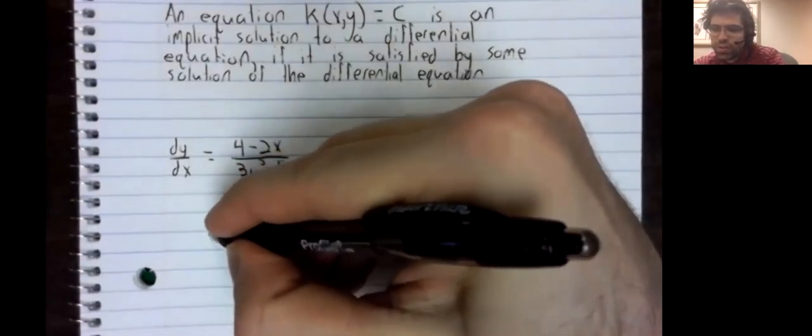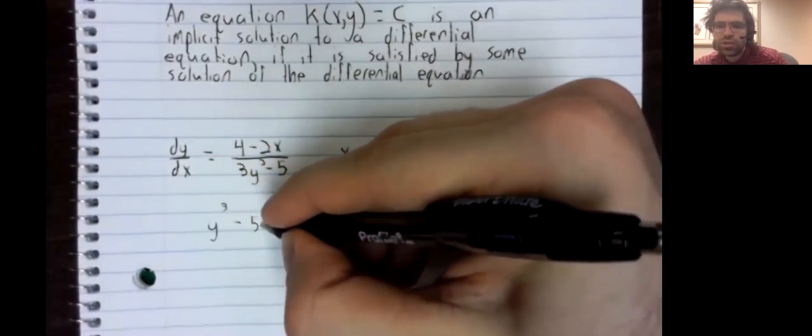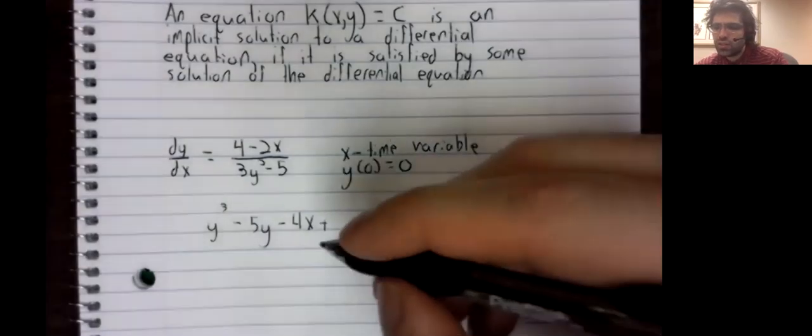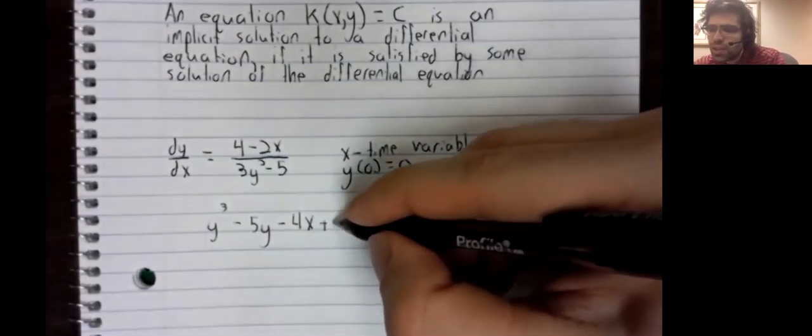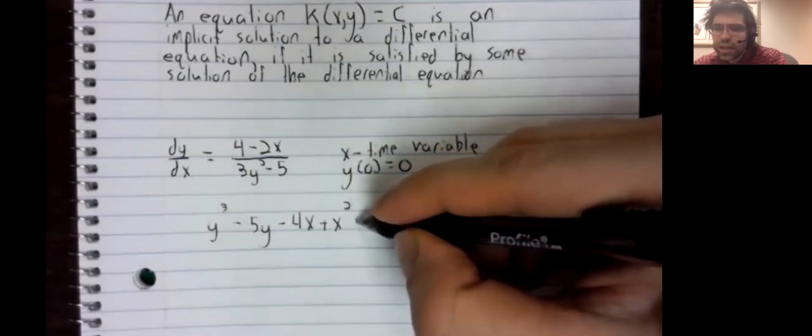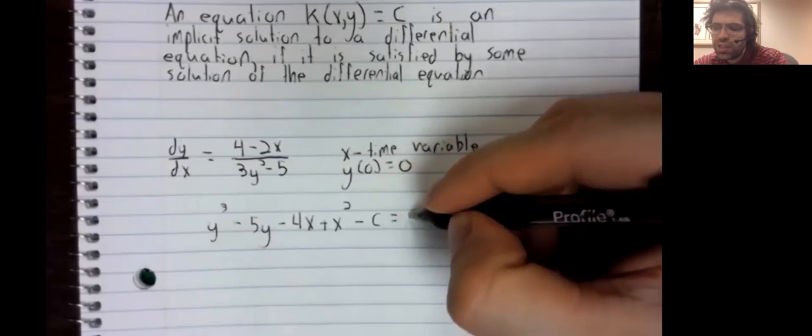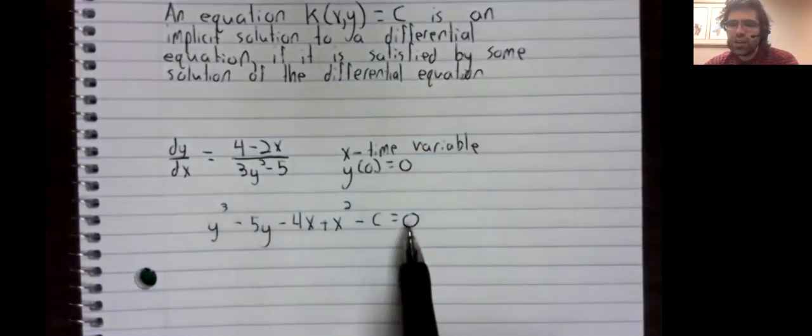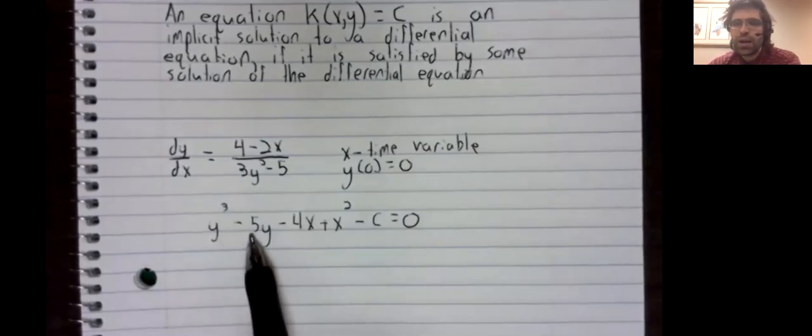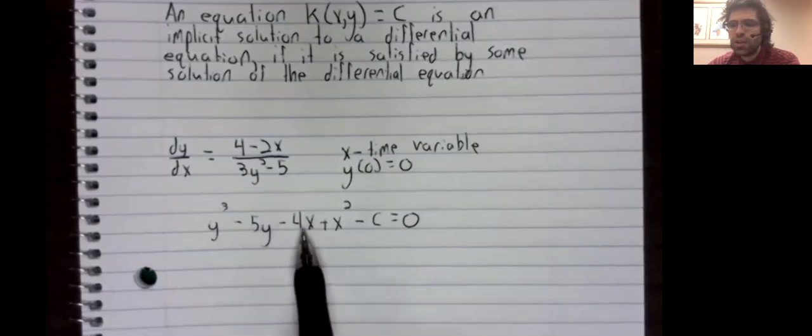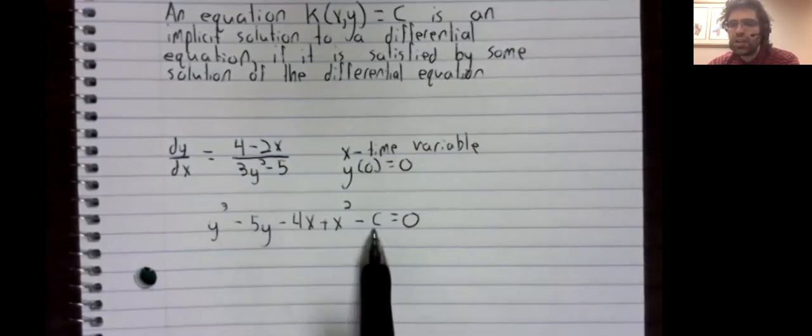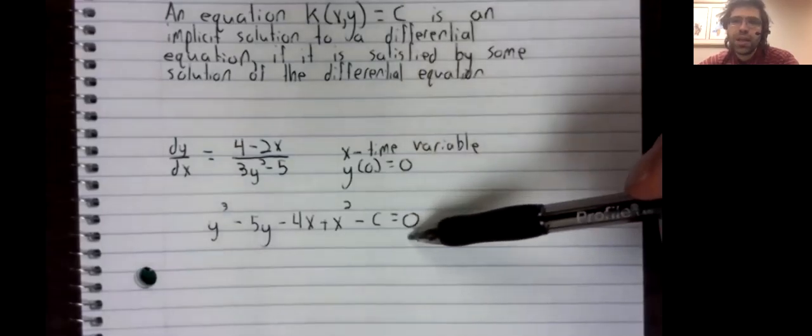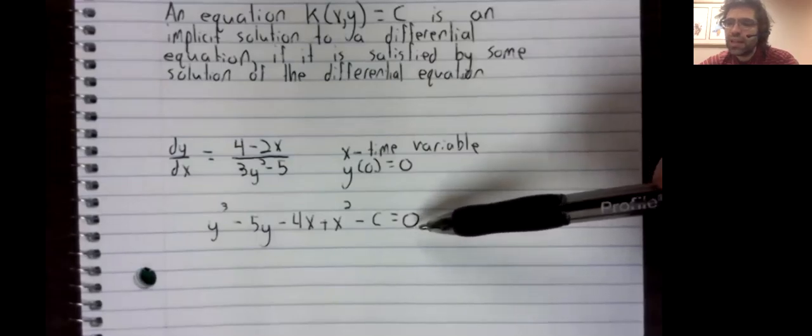We solved this one. When we last solved it, we had a variable c. We also didn't have it written quite like this. We had this y³ - 5y on one side of the equality, and all of this stuff on the other side. I'm just doing this because according to our definition, anything we have on the right hand side ought to just be a constant.